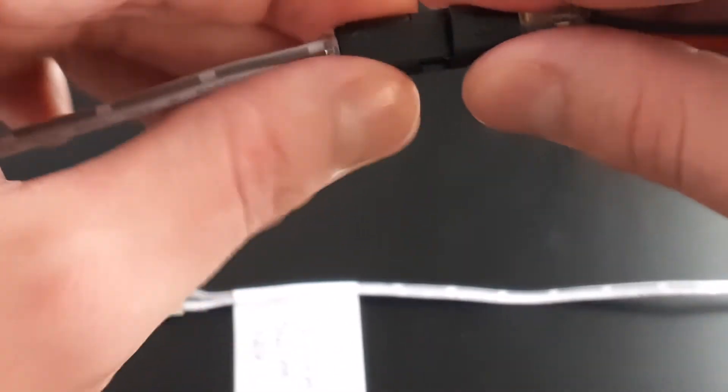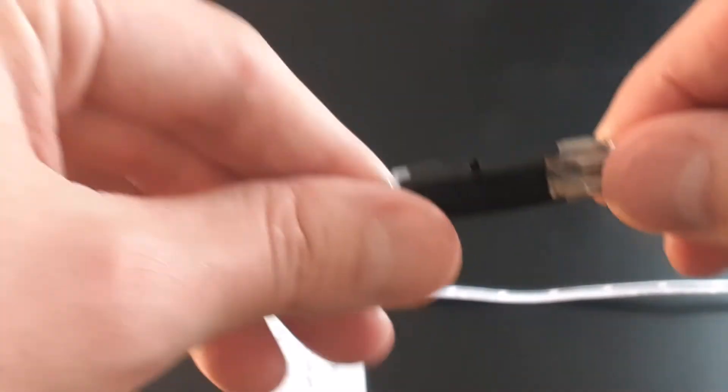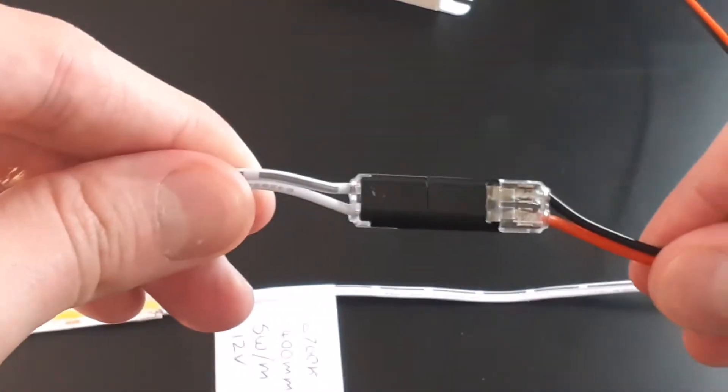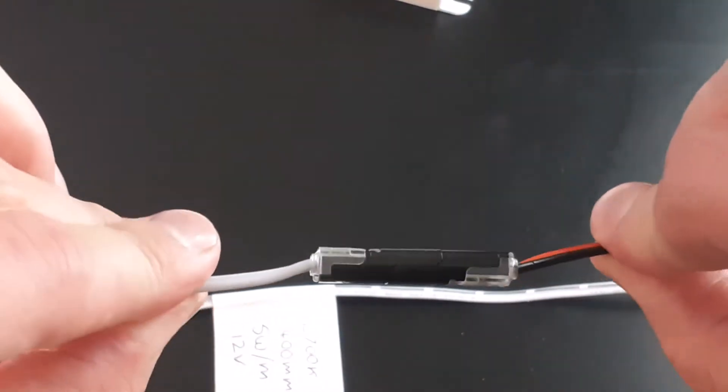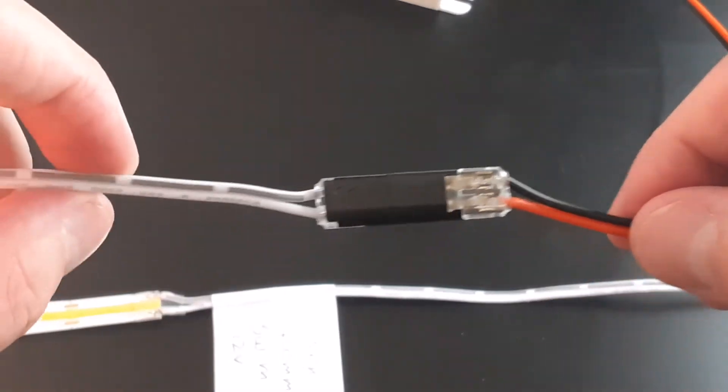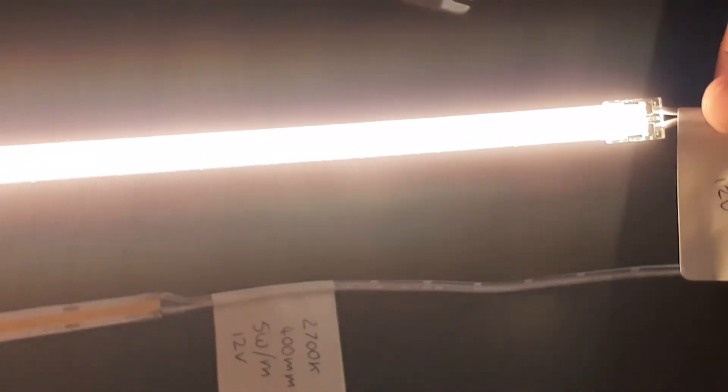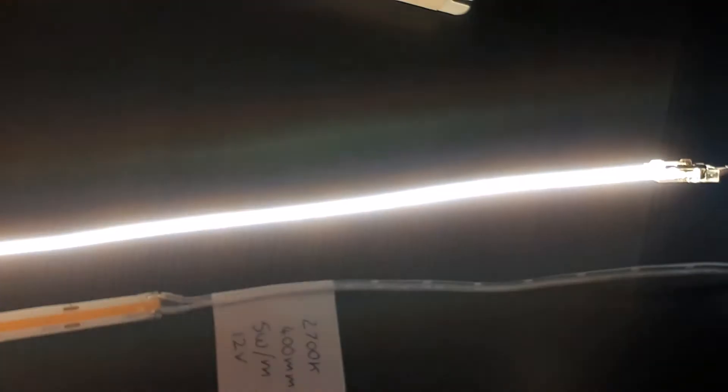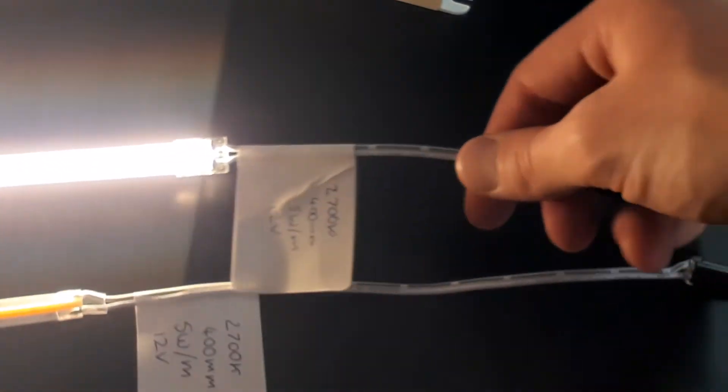As you can see when we connect these together, the negative matches the negative, the positive matches the positive, and now we have an illuminated strip that's connected directly to the power supply.